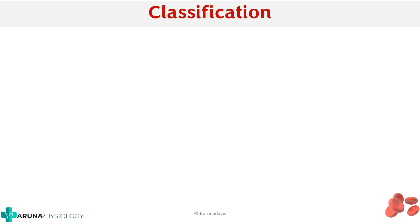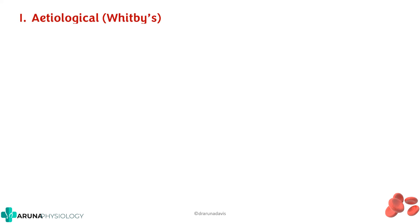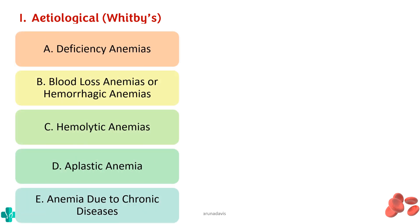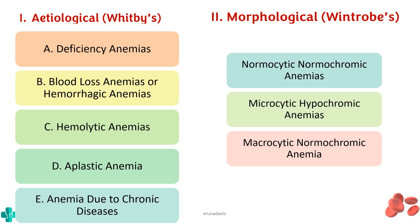Anemia can be classified in two ways. One is the etiological classification, also called Whitby's classification, based on cause — deficiency anemia, blood loss anemia, hemolytic anemia, aplastic anemia, or anemia due to chronic diseases. The other is the morphological classification, also called Winthrop's classification, based on how the RBC looks: normocytic normochromic, microcytic hypochromic, and macrocytic normochromic anemias.